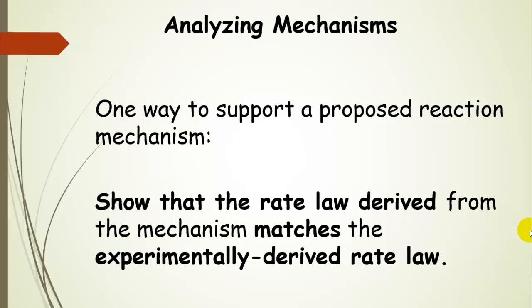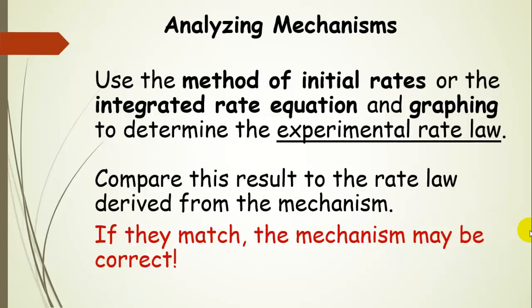If it does match, then that mechanism may be correct. The process would be to use the method of initial rates or the integrated rate equation and then graphing it to determine the experimental rate law. Then you're going to compare it to the rate law derived from the mechanism. As I said before, if they match, then the mechanism may be correct.